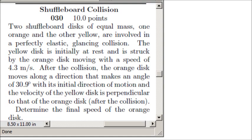Hello ladies and gentlemen, we're going to start. We're going to look at the shuffleboard collision where we have an orange disc moving at 4.3 meters per second to the left and colliding with a yellow disc, and the orange disc makes a 30.9 degree angle after collision. Let's take a look at this problem.